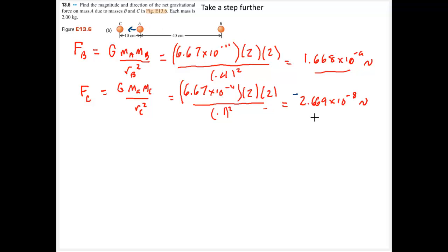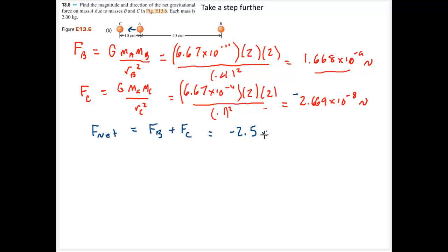The force is still quite small but much larger than the force from B. B and C are the same mass — the difference is that A is simply closer to C, so we expect the force to be larger. The net force on A is the force from B plus the force from C, which gives negative 2.5 times 10 to the negative 8 newtons — meaning the force is to the left, towards C.